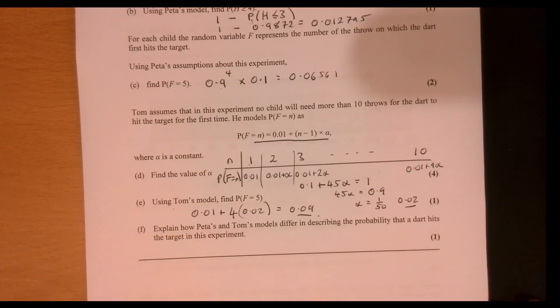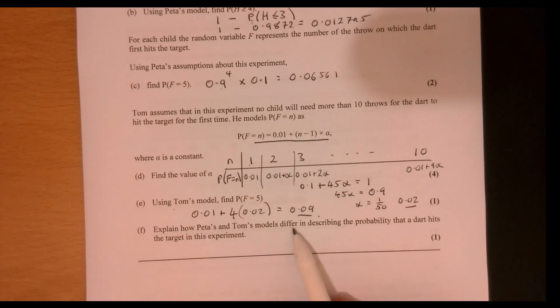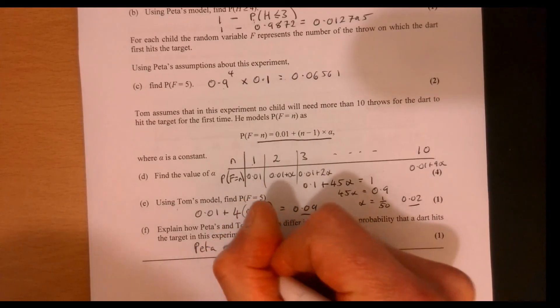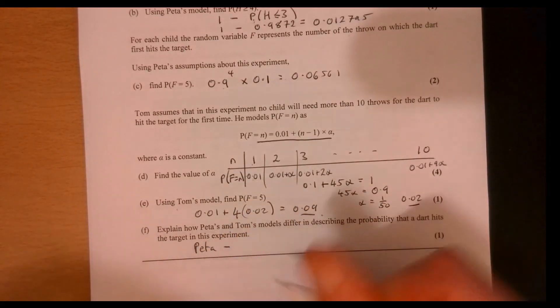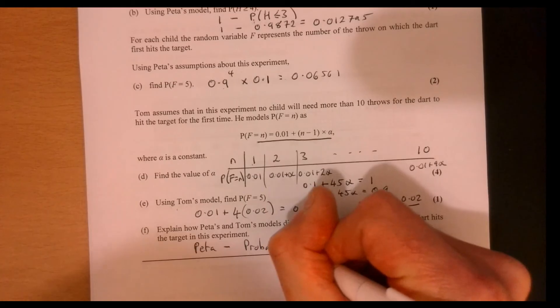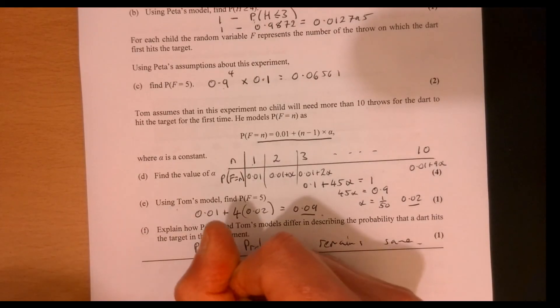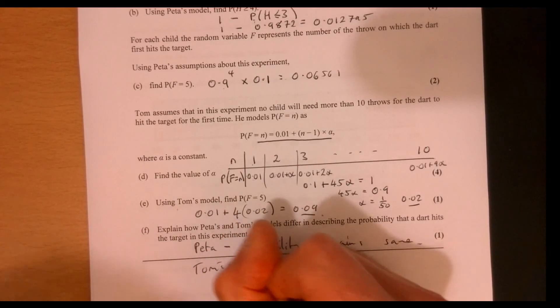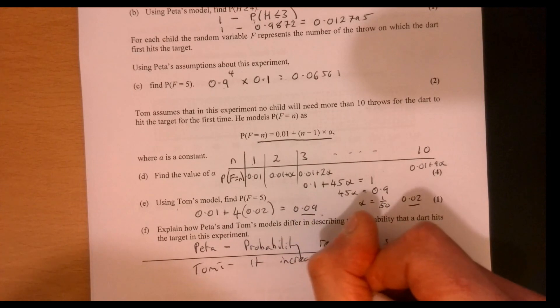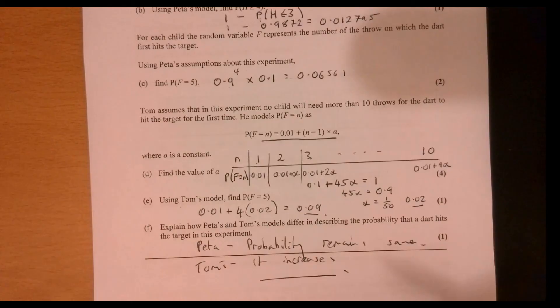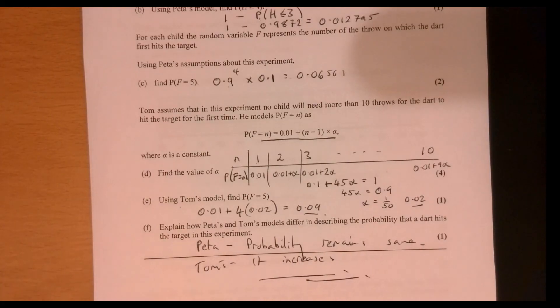And then the very last bit of the question, explaining how Petra's and Tom's models differ in describing the probability that a dart hits the target in this experiment. Well, for Petra, the probability remains the same. But on Tom's model, it increases. Now, if you think about it, it's probably more likely to be the case, isn't it? You know, because you're going to hopefully improve your chances as you kind of go through. So maybe that's a little bit more realistic.